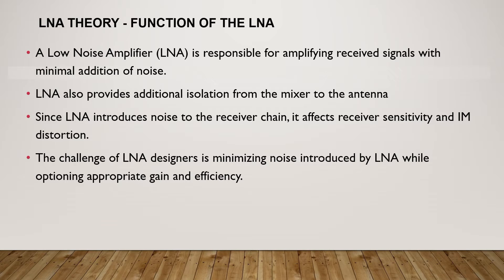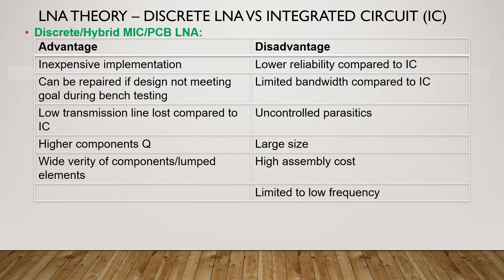Two ways of implementing an LNA are discrete and integrated circuit implementation, each with advantages and disadvantages. The advantages of discrete LNA over IC LNA are inexpensive implementation, can be repaired if design is not meeting goals during bench testing, low transmission line loss, higher component Q, and wide variety of components or lumped elements. The disadvantages of discrete LNA over IC LNA are lower reliability, limited bandwidth, uncontrolled parasitics, large size, high assembly cost, and limited to low frequency.